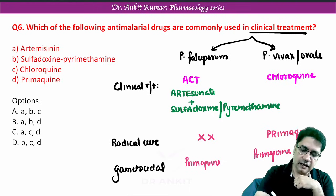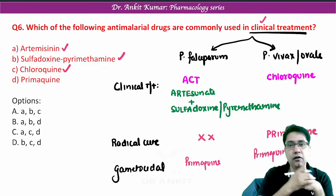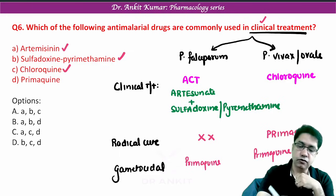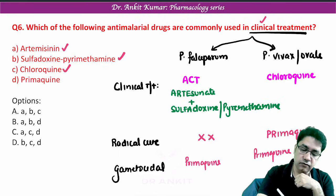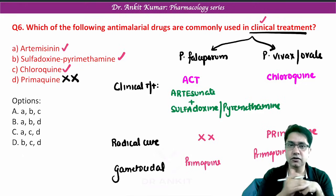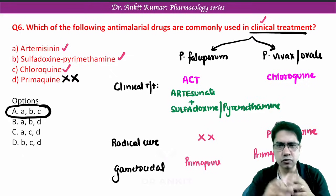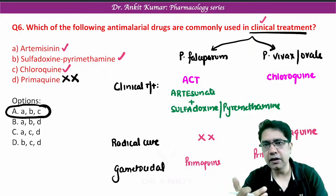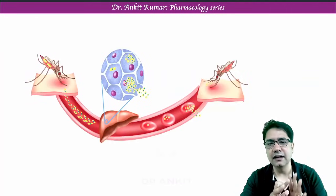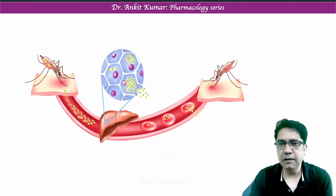So we can say artemisinin, sulfadoxine-pyrimethamine, and chloroquine are given for clinical cure. Primaquine is not given in clinical treatment. So the answer to our question comes out to be ABC. Now let me make you understand this even better — how does malaria spread?